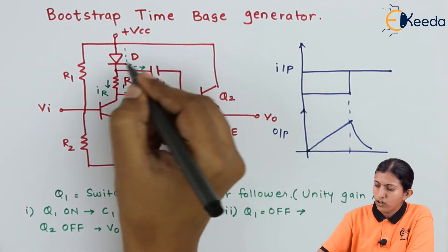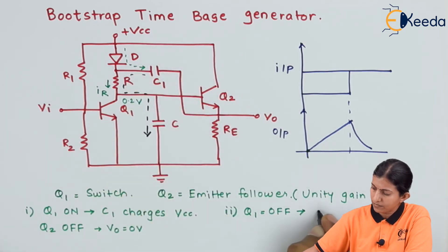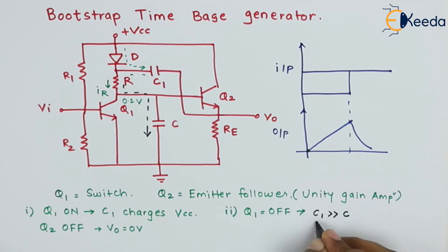As the value of capacitor C1 is very much greater than capacitor C, this capacitor C1 acts as a battery voltage. It will act as a battery. In that case, the diode is reverse biased.